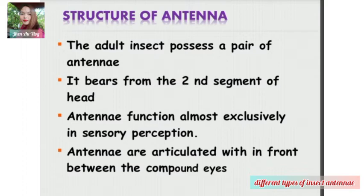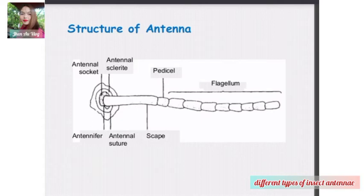The structure of antennae consists of: the antennal socket, antennifer, antennal suture, scape, antennal sclerite, pedicel, and flagellum.